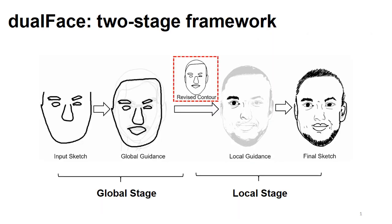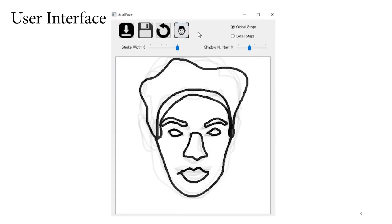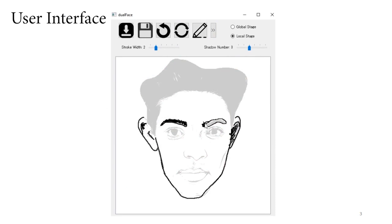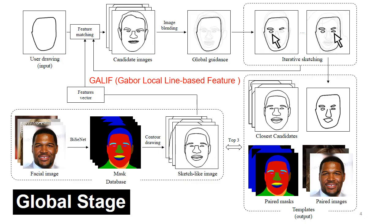In our approach, we help the user to first draw a rough contour sketch of the face and then generate high-quality local guidance. This is our framework, including a global stage and a local stage. I will introduce our user interface briefly to show how it works. As shown in this video, the user draws a rough sketch on the global stage and clicks the face icon to generate local guidance. Then they can draw in the sketch following the local guidance, which matches the contour sketch they have drawn.